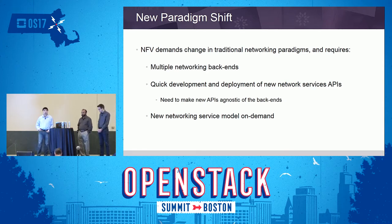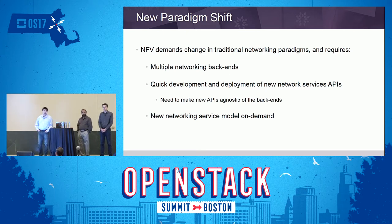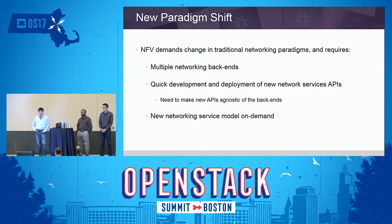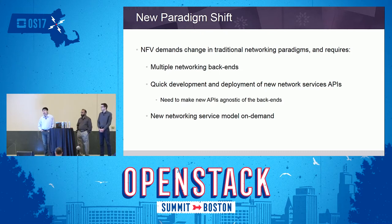We need to support multiple networking backends simultaneously. We also need to support quick development and accelerated deployment of new networking service APIs, and make these new APIs agnostic of those different backends. Backends could be OpenDaylight, ONOS, Contrail, or any other SDN controllers to control different switches. We need networking service on demand, which means supporting unknown unknowns in the near future and new innovations happening in the NFV networking space.